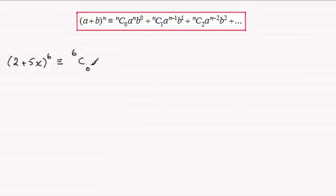So we end up with 6C0 for the nC0, then it's a to the power n so it's going to be 2 to the power of n which is 6. 2 to the power of 6, and then it's multiplied by b to the power of 0. b was the 5x so we've got all of 5x to the power of 0.